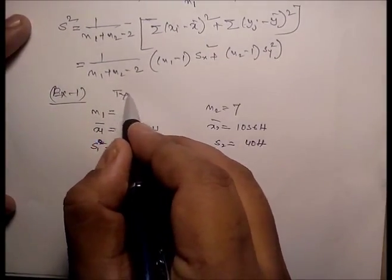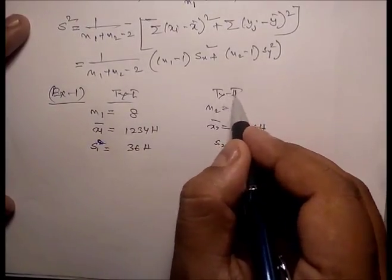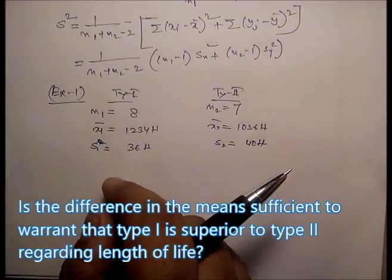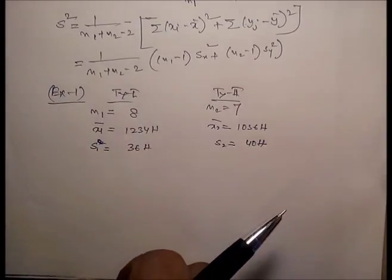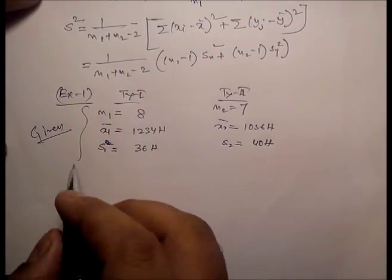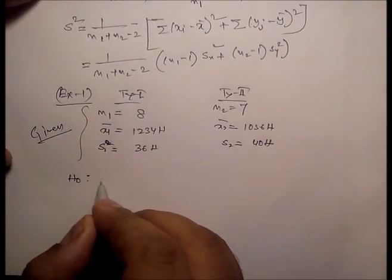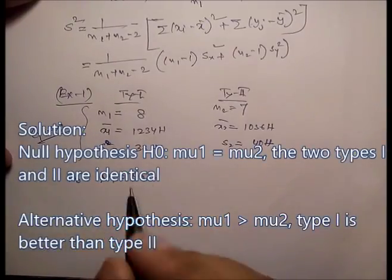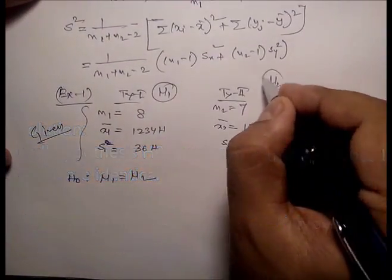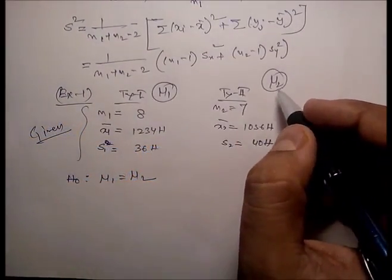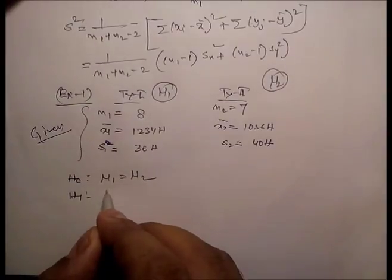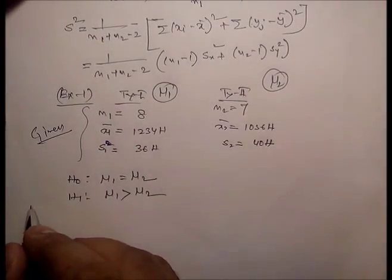Type 1 and Type 2 bulbs are compared. The question is: is the difference in the mean sufficient to conclude that Type 1 is superior to Type 2 in length of life? Null hypothesis: mu1 equals mu2 (mu1 is the mean lifetime of Type 1, mu2 is the mean life length of Type 2). Alternative hypothesis: mu1 greater than mu2, so we apply a right-tail test.